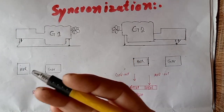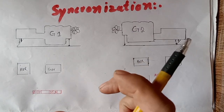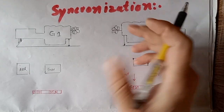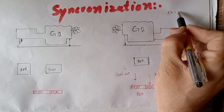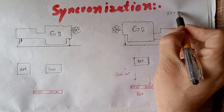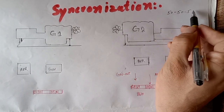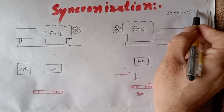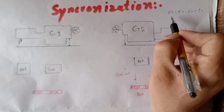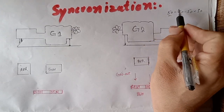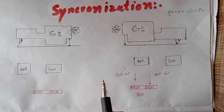If you want to synchronize two generators, you need to synchronize two of the same type. For example, a 50 KVA generator needs to be paired with another 50 KVA generator to run in parallel — same rating generators can easily be synchronized and used in parallel.